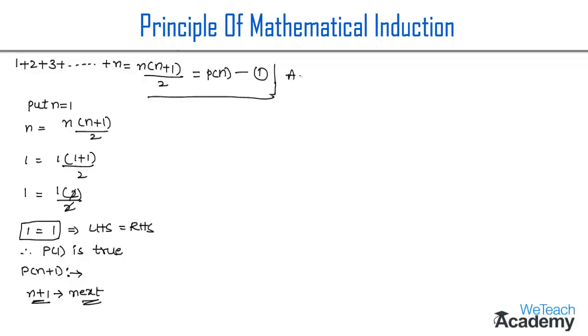Now by adding n plus 1 on both sides of equation 1, we get 1 plus 2 plus 3 plus so on plus n plus n plus 1 equals n into n plus 1 divided by 2 plus n plus 1.